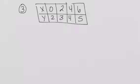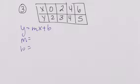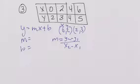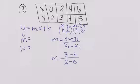We have another chart, so we're going to do the same exact thing. Y is equal to MX plus B, M equals, B equals. We're going to use ordered pairs (0, 2) and (2, 3). M equals Y2 minus Y1 over X2 minus X1. So it's going to be 3 minus 2 over 2 minus 0, which gives one over two. So M is one-half.